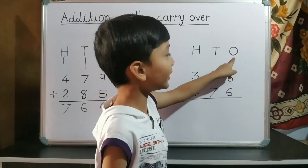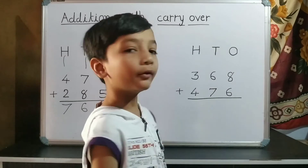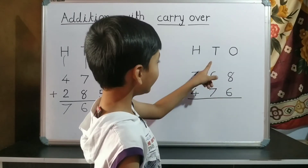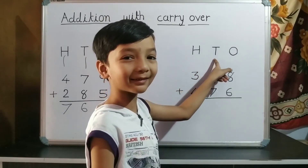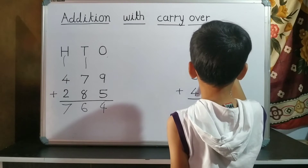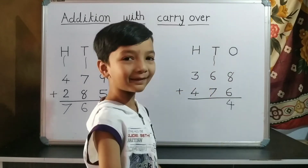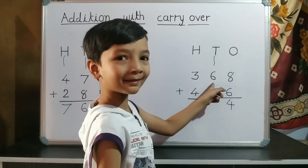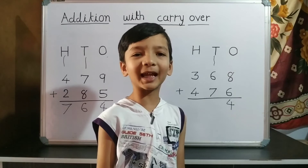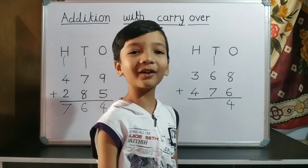First we do addition of one's place. 8 plus 6. Now we do addition of ten's place. 1 plus 6 is 7. 7 plus 7 is 14. So we write 4 on ten's place and 1 carryover to hundred's place.